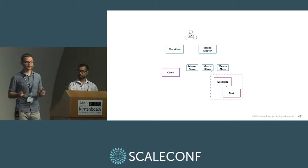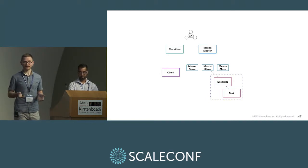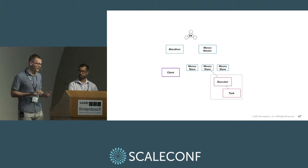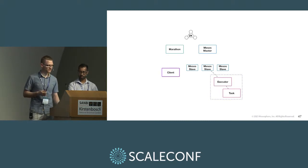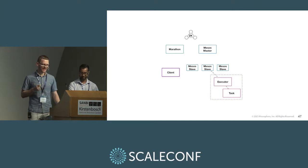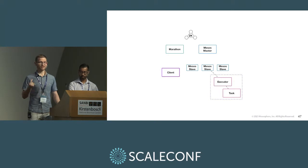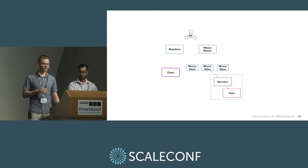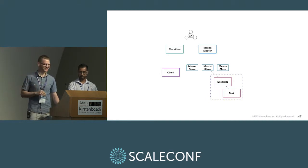Maybe something caught fire, a power strip melted, or a node is just out — or maybe you had a problem with your application, in which case you should check that. But your applications — even if they're failing once every 10 minutes, running out of memory, or have a critical architectural fault — can still run. They'll just be popping up all over your data center.